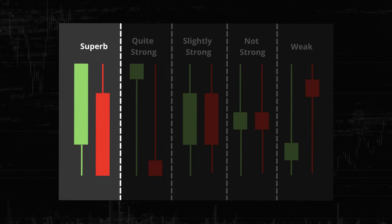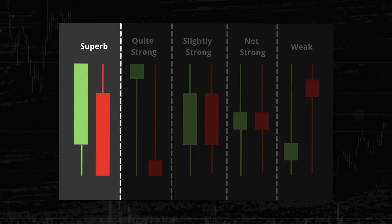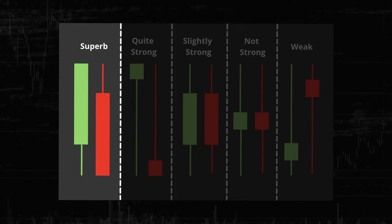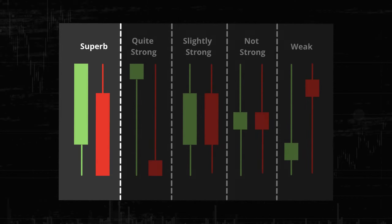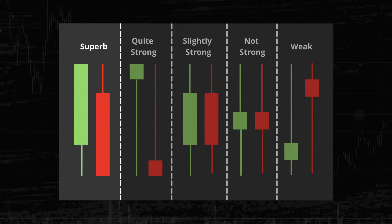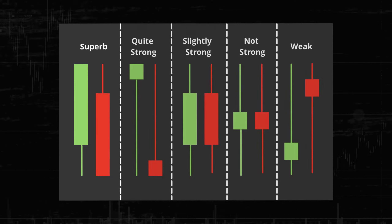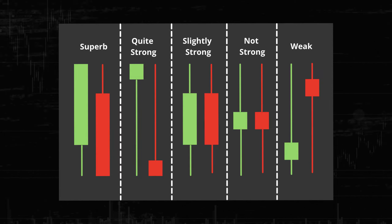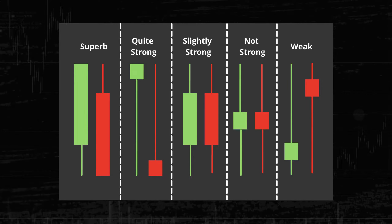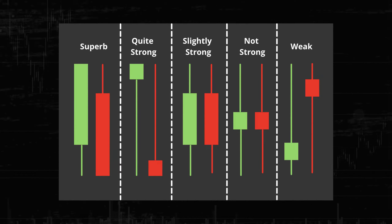One of the things you need to keep in mind is that wicks are kind of the most important part of the candle. They show you how far buyers or sellers were able to push price, and then where the opposite side stepped in and closed price for that time period.